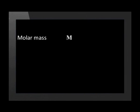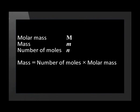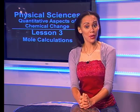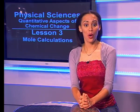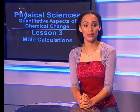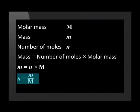We can write this as a formula. In the formula, molar mass is represented with a capital M, mass is a small letter m, and the number of moles is represented by a small letter n. We know that the mass is equal to the number of moles multiplied by the molar mass, so the formula is m = n × M. The equation can be rearranged so that the number of moles is the subject: n equals the mass divided by the molar mass.